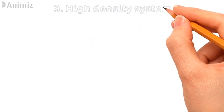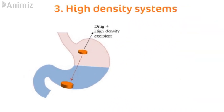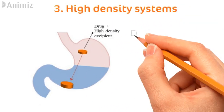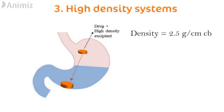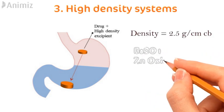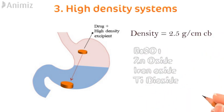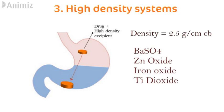The third system is high density systems. These systems have a density of around 2.5 grams per centimeter cube. The drug is mixed with excipients of high density, for example barium sulfate, zinc oxide, iron oxide, and titanium dioxide. These systems are exactly opposite to floating systems.